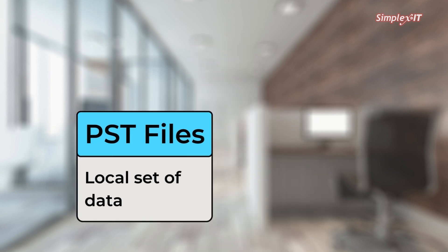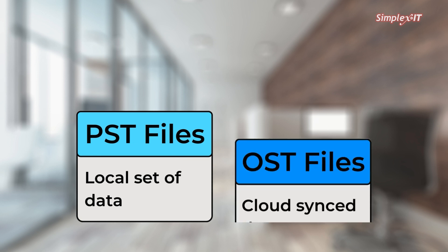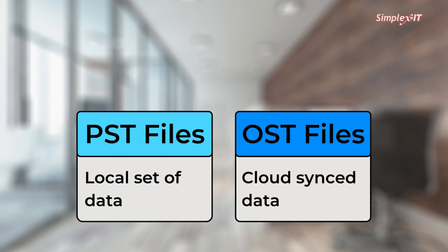Historically, these are file types that Microsoft has always used through Outlook to store your data — emails, calendar events, contacts — on your computer. PST files were a local set of data only, not in the cloud, whereas OST files were synchronized with the cloud so you can work offline and then synchronize back when you go online.